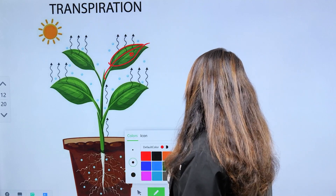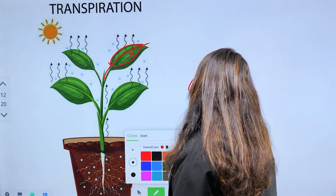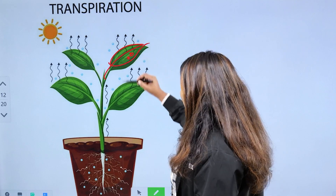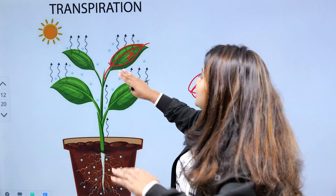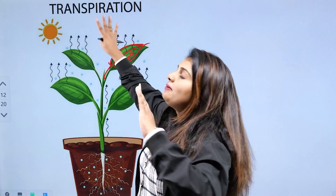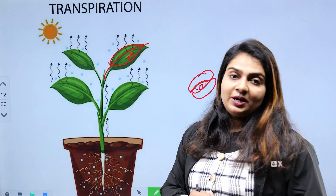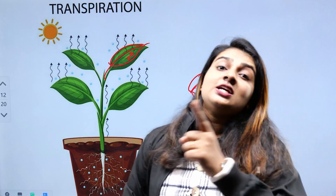In the stomata, there are water droplets. The leaves lose water droplets through this process. This is called transpiration.